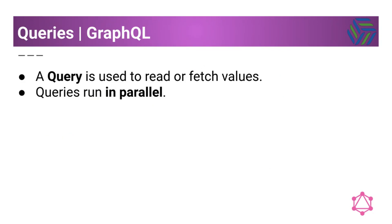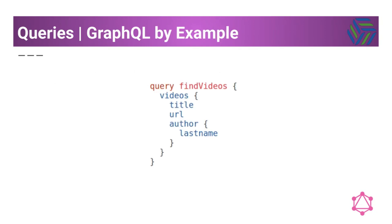So what is a query in GraphQL? A query is used to read or fetch values, and GraphQL queries run in parallel. Here is an example of a query that could be performed by a GraphQL client — a find videos query that is going to fetch the title and URL of the video and the last name of the author.